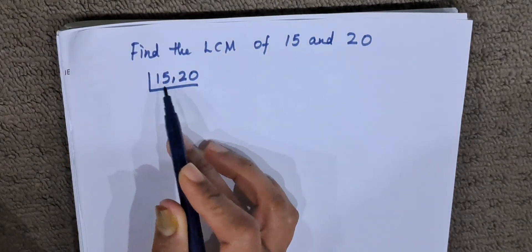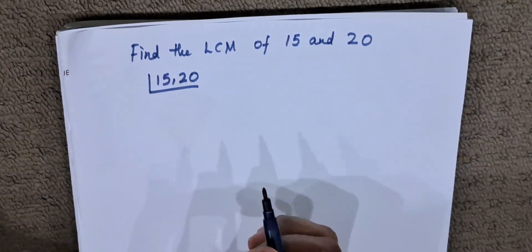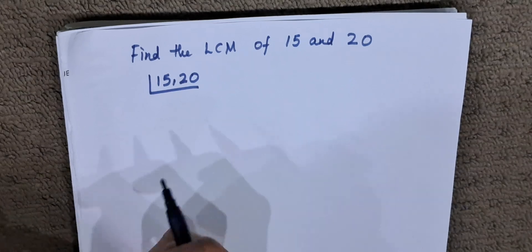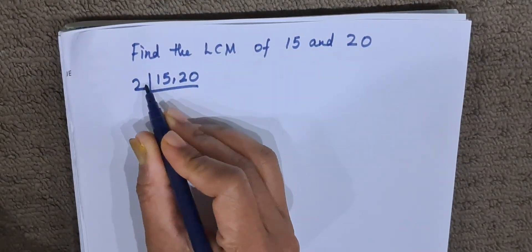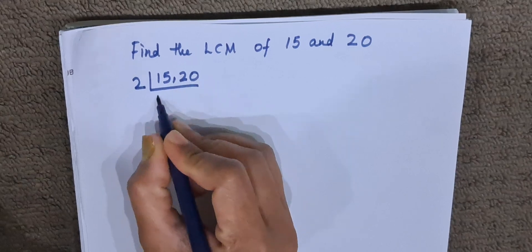We will go on finding the prime factors of 15 and 20. We start with the smallest prime number, which is 2. It divides 20, so 15 remains as it is.